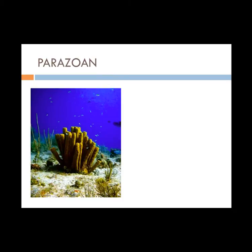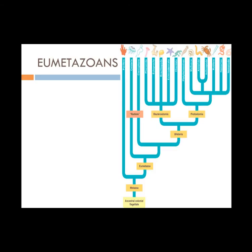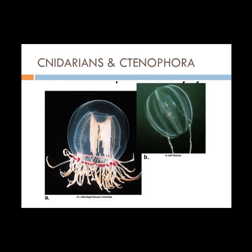Parazoans are sponges. They lack true tissues and are the early branch of the animal kingdom. Eumetazoans have tissues and include all other animals. Eumetazoans are divided into two major branches. The first one, previously known as radiata, includes the phylum cnidarians and the phylum ctenophorans.